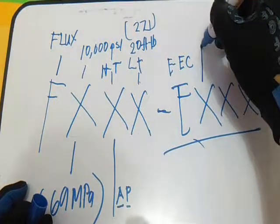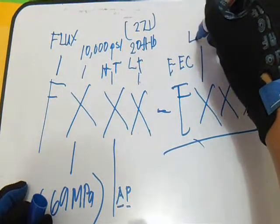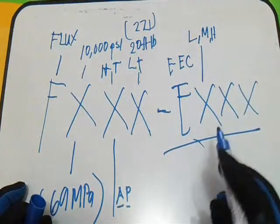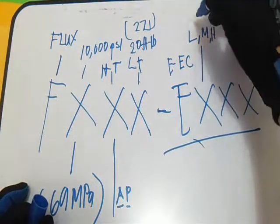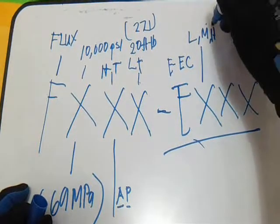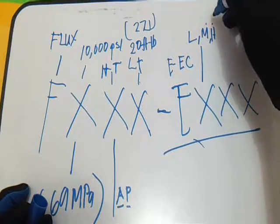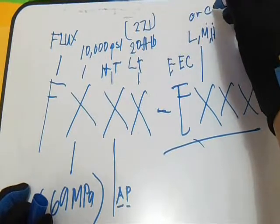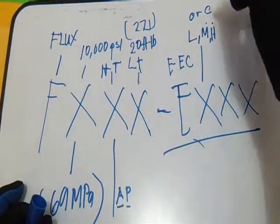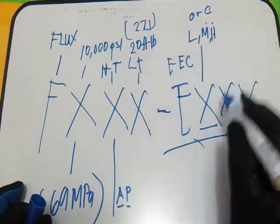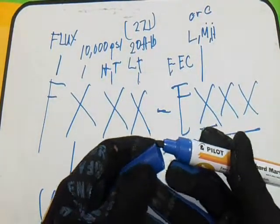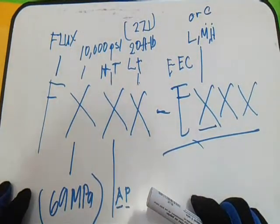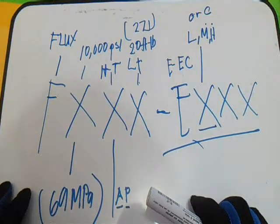The fourth X can be L, M, or H, meaning low, medium, or high manganese content. Or it can be C for composite electrode. So we have low, medium, and high manganese content or composite.